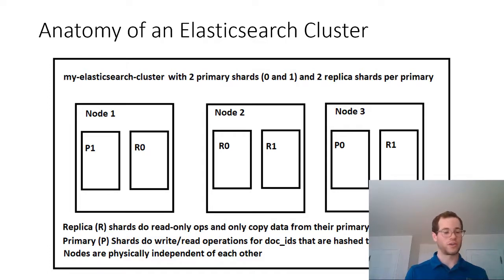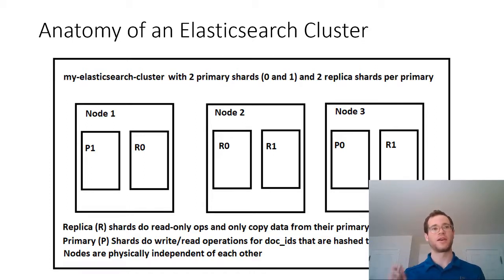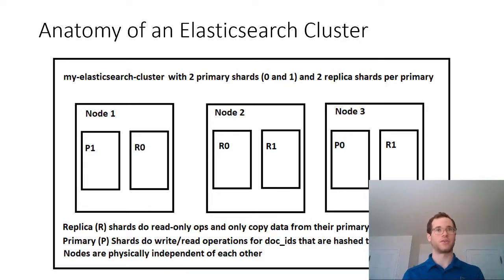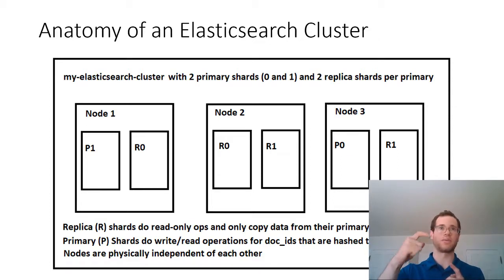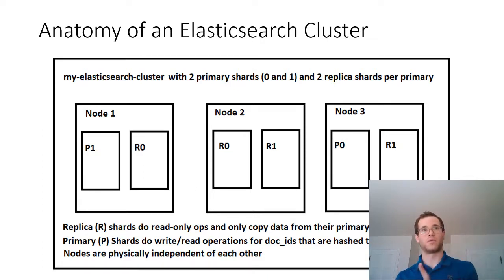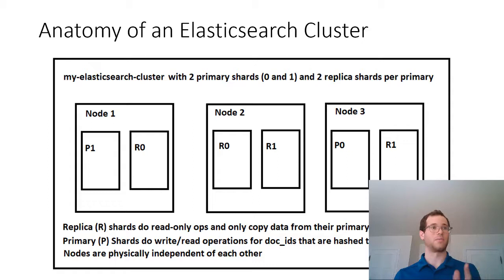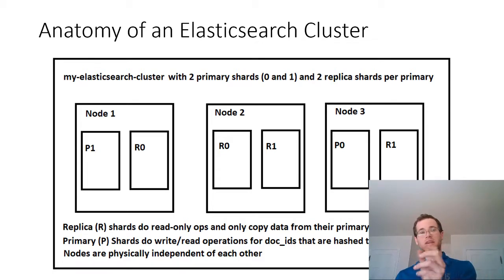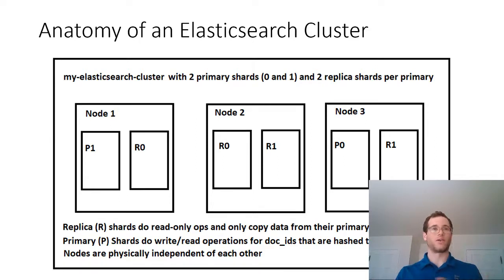When you're creating an index in Elasticsearch, you define how many replica shards and how many primary shards you're going to have. In this particular instance, we have two primary shards — shards 0 and 1 — and for each of those primary shards, they have two separate replicas. So for primary shard 1, I have replica 1 on node 2 and replica 1 on node 3. If something were to happen to primary node 1 — if it blew up — I would lose primary shard 1, but because nodes 2 and 3 both have a replica, they will be immediately able to take over.